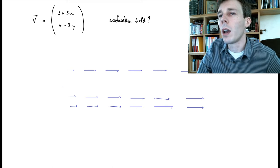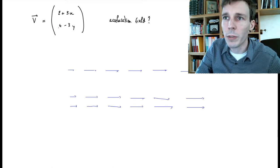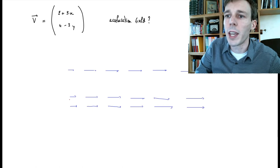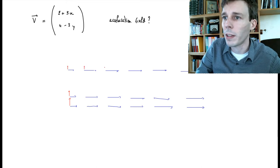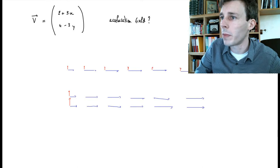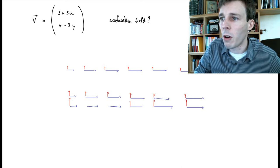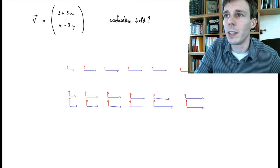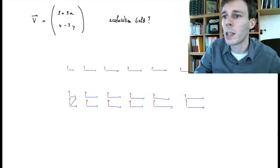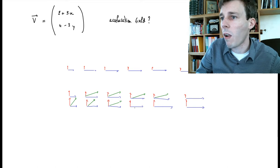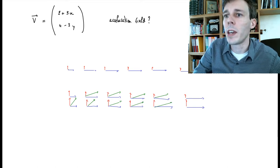Now if you plot the y-component, it is a constant minus something that increases with y, so the vectors become smaller in the y-direction as y increases. The y-component does not depend on x. When you draw the sum of those two components you get the full velocity vector field, which looks something like this.